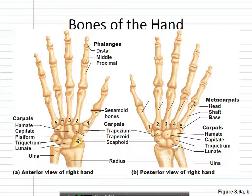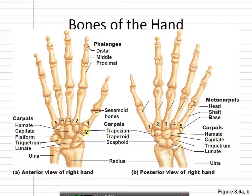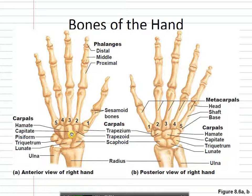The scaphoid is the first carpal bone, sitting proximal and lateral. Then the lunate, the triquetrum, and then the pisiform sits right above it. If you go to the next level and start over, you have the trapezium — which is significant because it pivots with the thumb and has a special shape for that — then the trapezoid going with the pointer finger, the capitate, and then the hamate. That's four across the proximal row and four across the distal row, and when you're looking at the front that's the only time you see all eight.